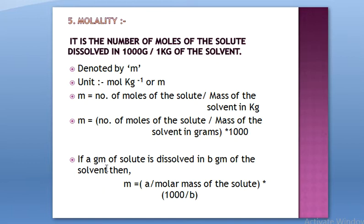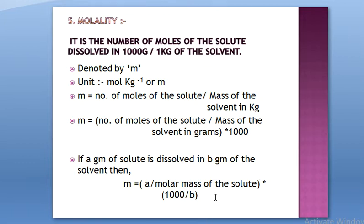For a general equation: if 'a' grams of solute is dissolved in 'b' grams of the solvent, then molality m = (a / molar mass of solute) × (1000 / b). Here, (a / molar mass) gives moles of solute and (1000 / b) converts grams of solvent to kg. These are two separate entities multiplied together.